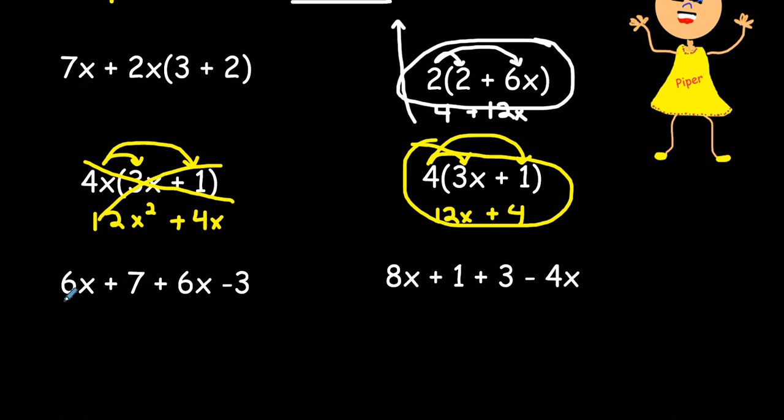My last two I have like terms here and here. 6x plus 6x, I'm just going to add the coefficients 6 plus 6 to get 12x. Then we have a constant 7 minus 3 and 7 minus 3 is equal to 4 so it would be 12x plus 4 and once again we got an equivalent expression.